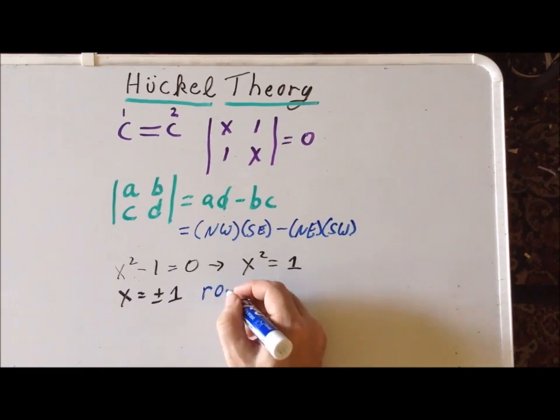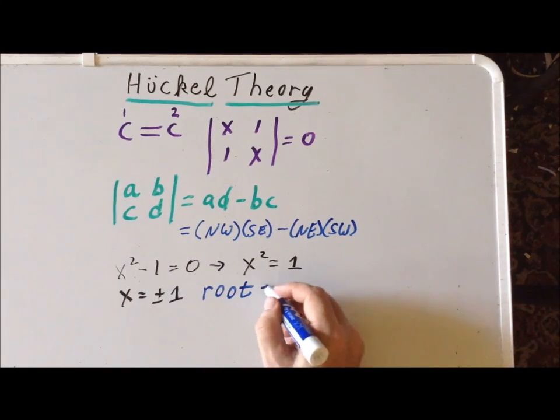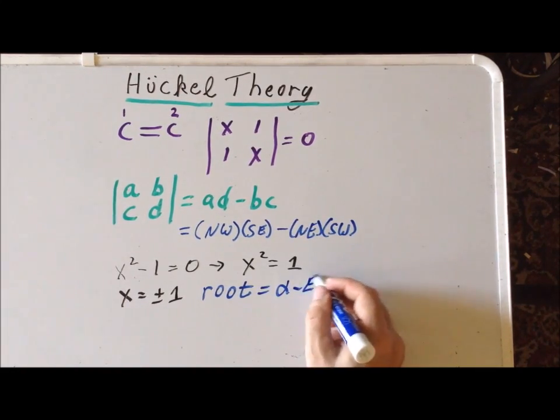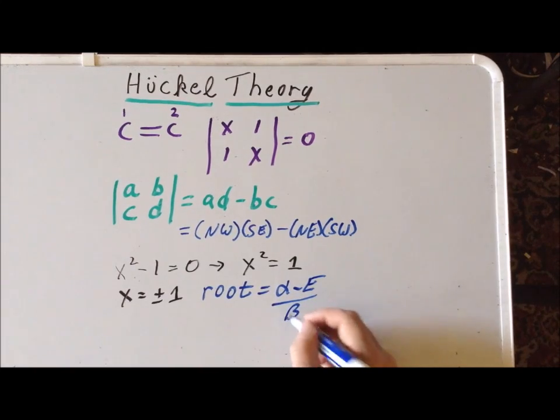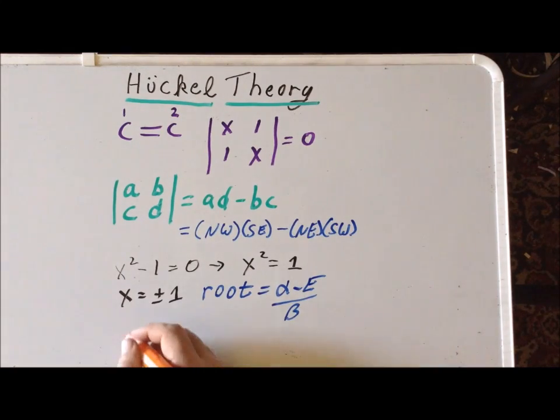Using the same substitution, the root equals alpha minus the energy divided by beta. Let's solve for the energy. We multiply each side by beta, add E to each side, and subtract beta times the root from each side. Using ordinary algebra, we get that the energy is equal to alpha minus beta times the root.